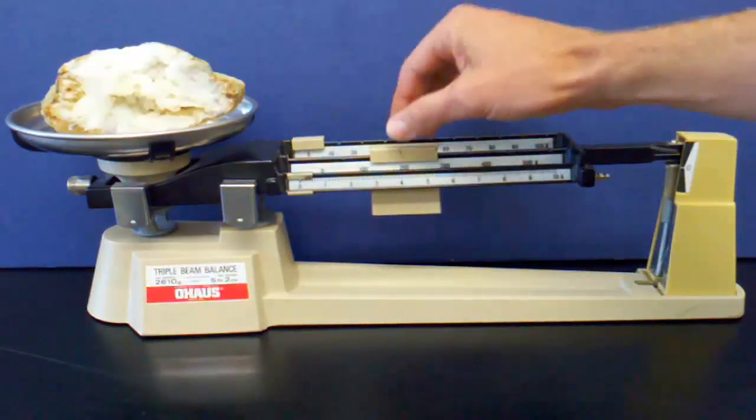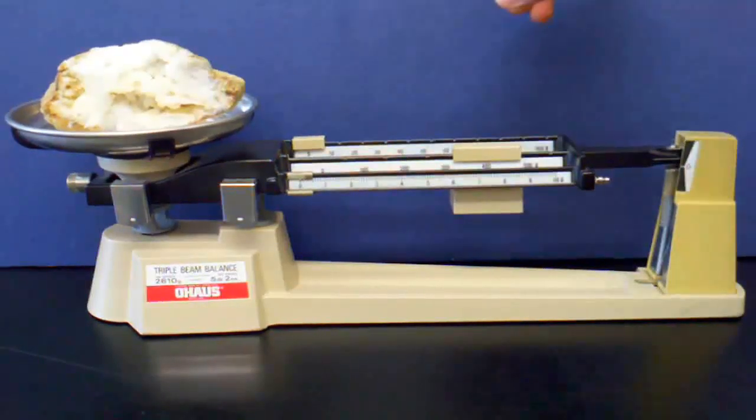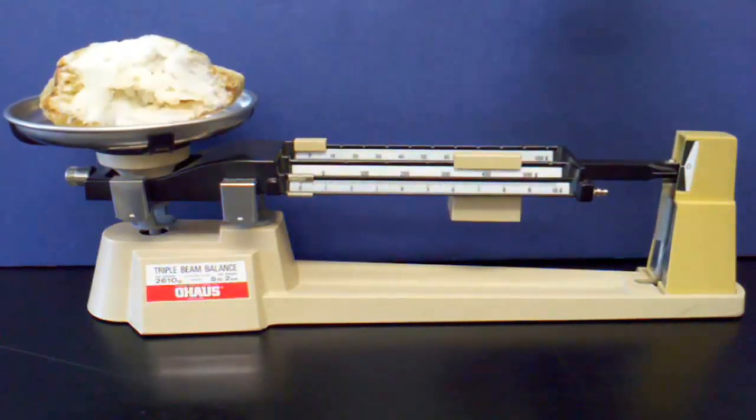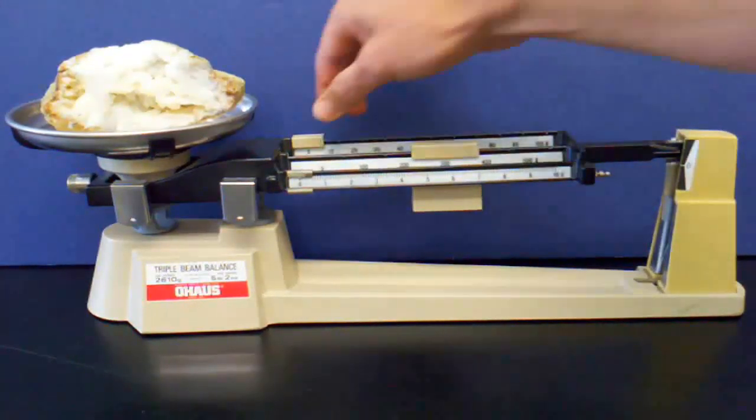Starting with the 100-gram slide, I slide it along the rails until I find it is heavier than the object in the pan. Then I back it up one notch.